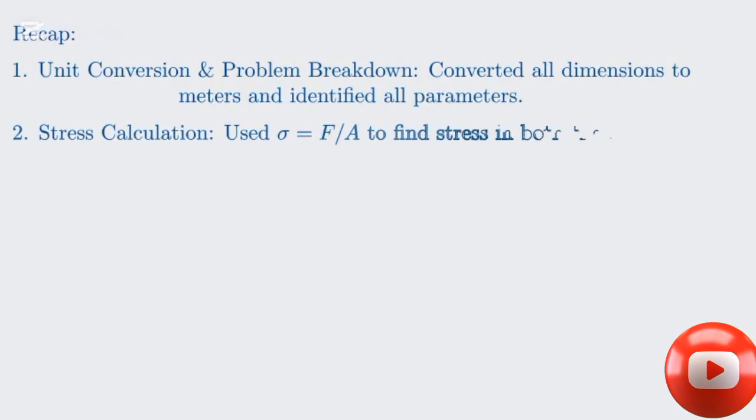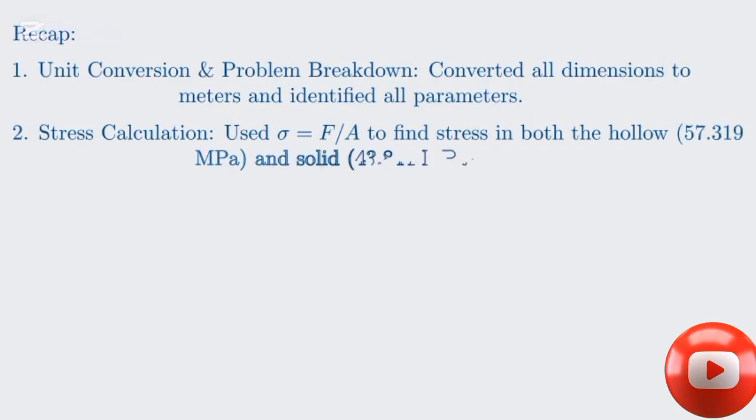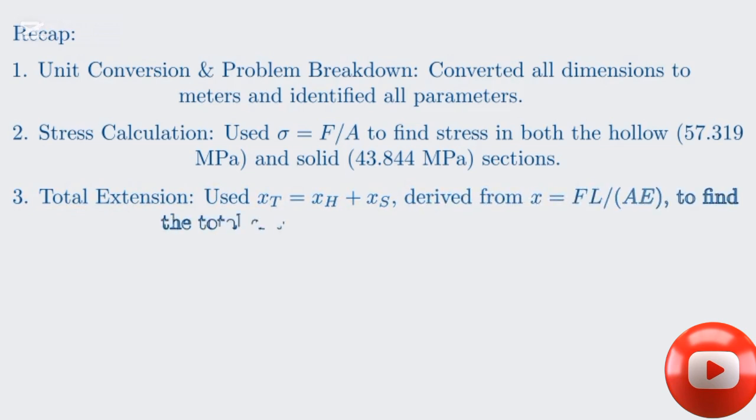So, let's recap what we've accomplished in this walkthrough. First, we meticulously identified and converted all the given units into a consistent system. Second, we successfully calculated the stress in both the hollow and solid sections of the rod using the appropriate area formulas. Finally, we determined the total change in length by summing the extensions of each part, demonstrating how to handle sections with different geometries under the same load. The slight difference we saw in the total extension is a great example of how intermediate rounding can affect final answers. It highlights the importance of keeping as much precision as possible throughout a calculation.